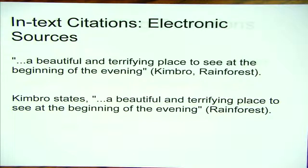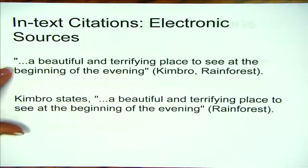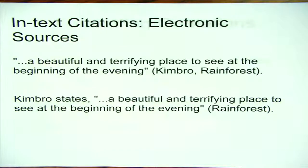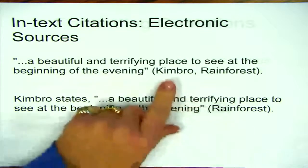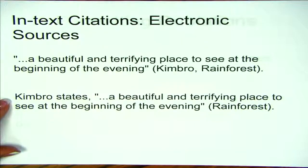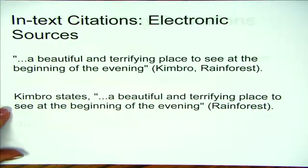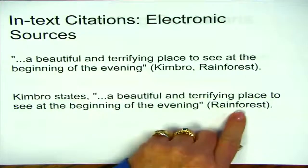The next thing we want to look at is in-text citations — how do we actually tell the reader where to look for this material. These are called in-text citations or parenthetical citations. Here's an example of a direct quote — you can tell it's direct because it has quotation marks around it, and at the end of the quote is your citation. It tells you the author's name was Kimbrough and it was published in the article 'Rain Forest.' Here's another way to use in-text citations: you use the author's name, a direct quote with quotation marks, and then list 'Rainforest' in your citation to indicate which article it came from.